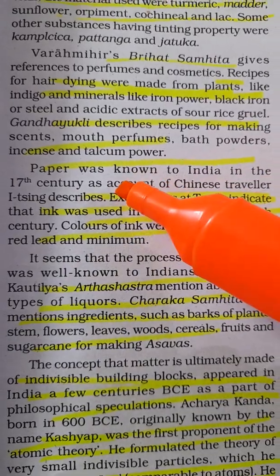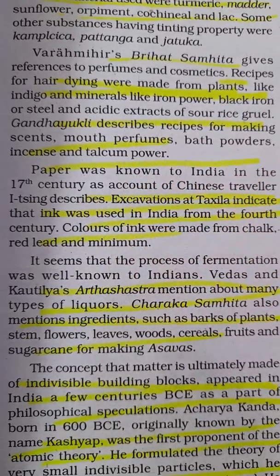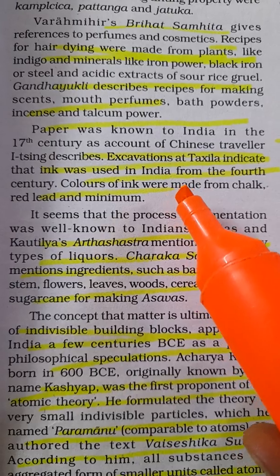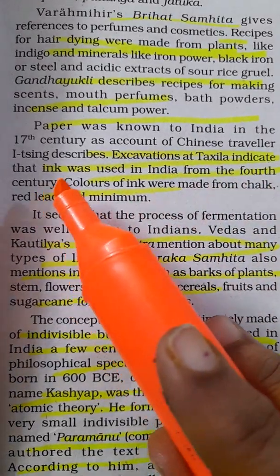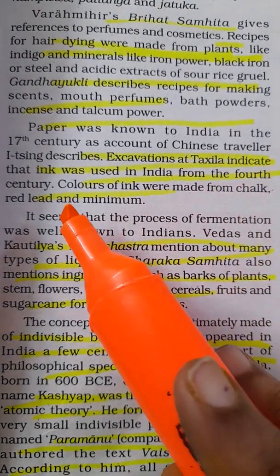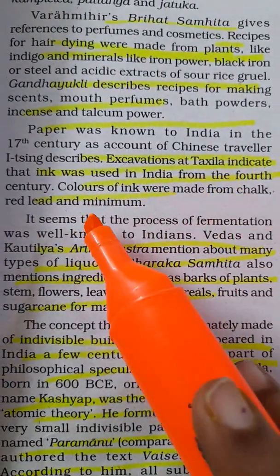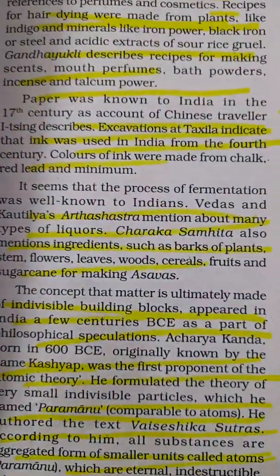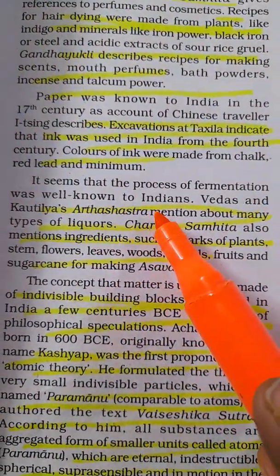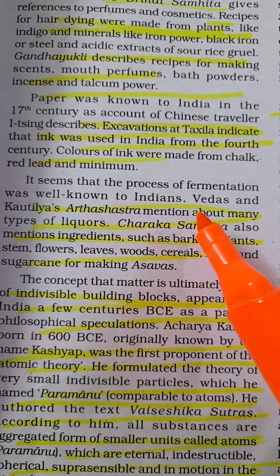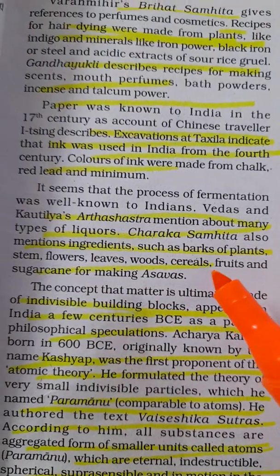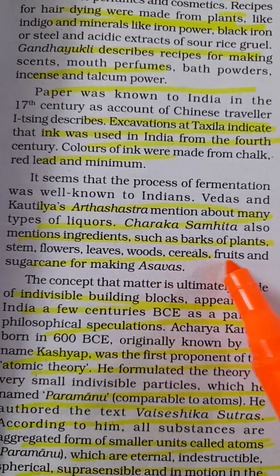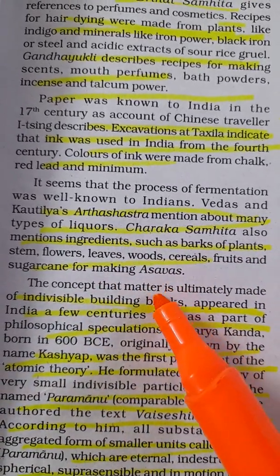Ganita Yukali describes the preparation of scents, mouth perfumes, bath powders, incense, and talcum powder. Paper was known to India in the 17th century, as described by the Chinese traveler Xuanzang. Excavations at Takshila reveal that ink was used in India from the 4th century, with colors made from chalk, red lead, and minium. The process of fermentation was also well known to Indians — the Vedas and Kautilya's Arthashastra tell about different types of liquors, and Charaka Samhita mentions ingredients like barks, stems, flowers, leaves, wood, cereals, fruits, and sugarcane for making asavas.